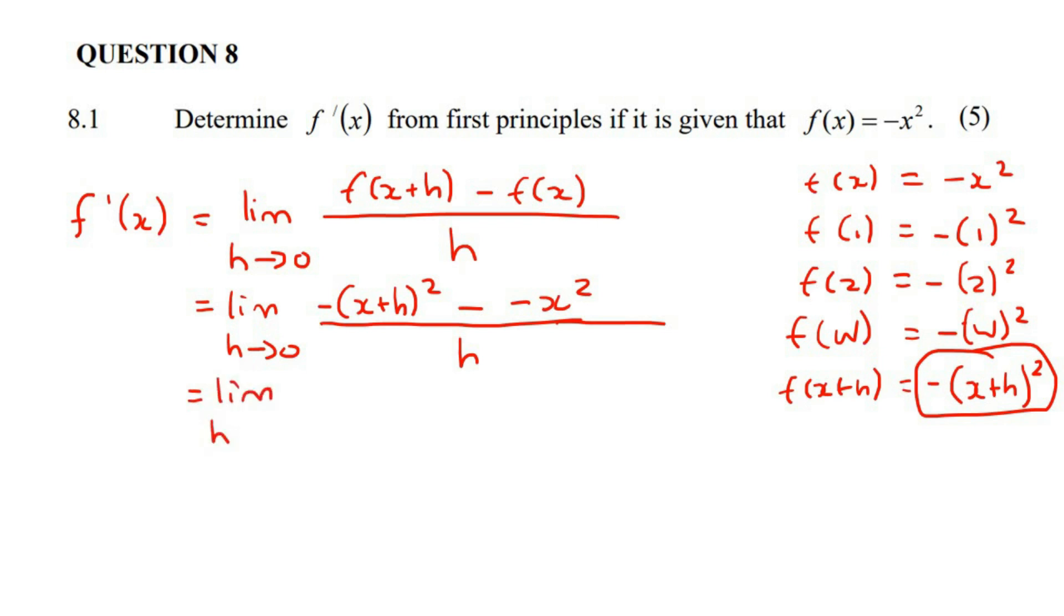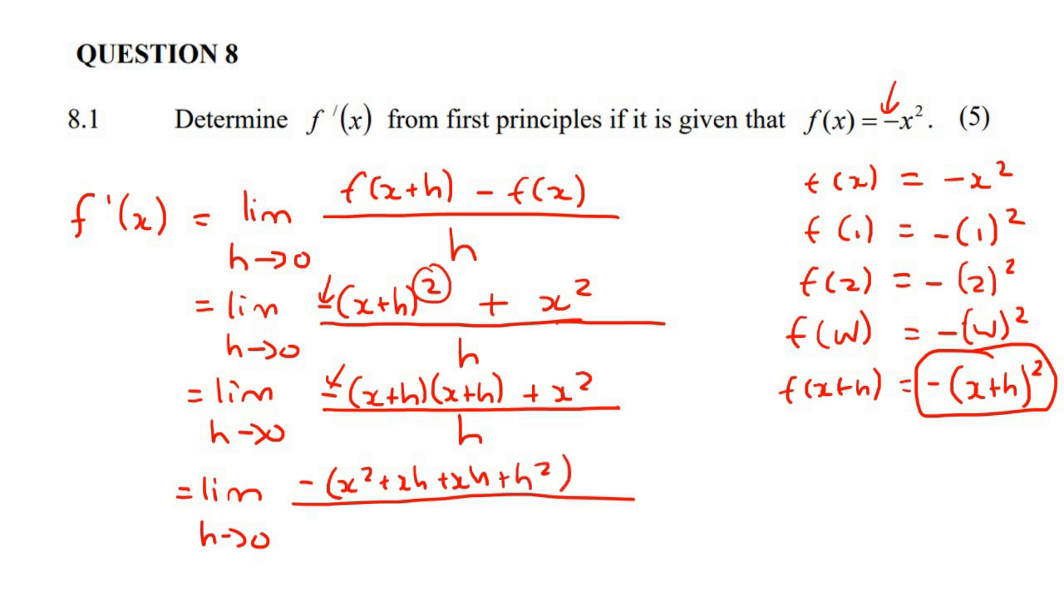And now we're just going to go simplify as much as possible. So I know that this negative and this negative makes a positive. Now, there's a lot that can go wrong here. I find that this question is actually quite challenging with that negative. So leave this negative alone, open up two brackets, because there's a two over there. There we go.